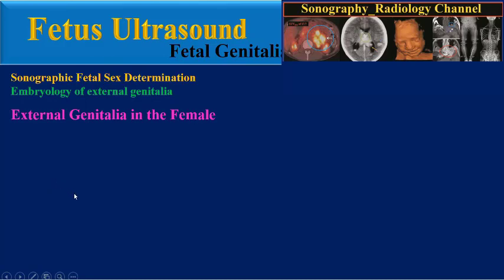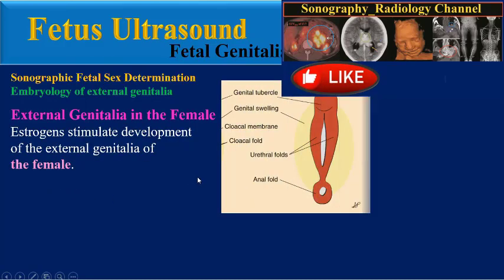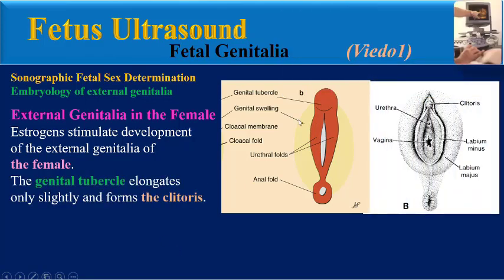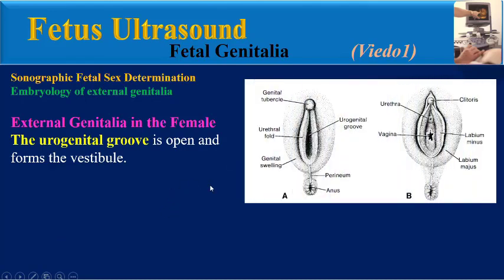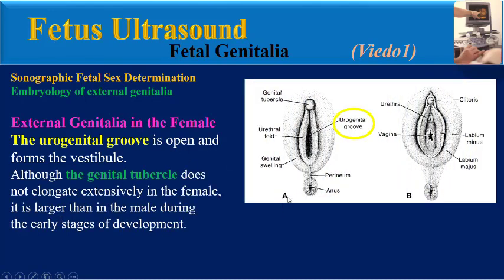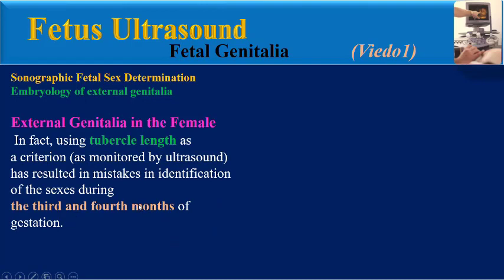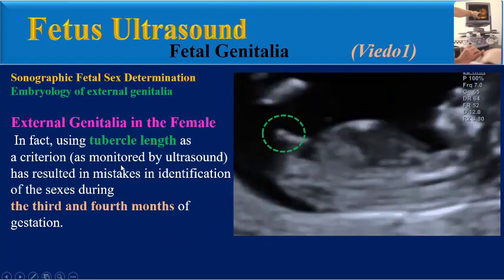External genitalia in the female: Estrogens stimulate development of female external genitalia. The genital tubercle elongates only slightly and forms the clitoris. Urethral folds do not fuse as in the male but develop into labia minora. Genital swellings enlarge and form the labia majora. The urogenital groove remains open and forms the vestibule. Although the genital tubercle does not elongate extensively in the female, it is larger than in the male during early stages of development — so using tubercle length as a criterion by ultrasound has resulted in mistakes in sex identification during the third and fourth months of gestation.